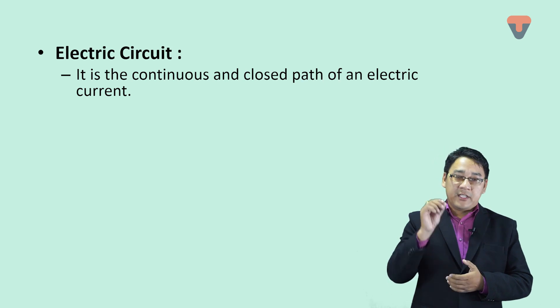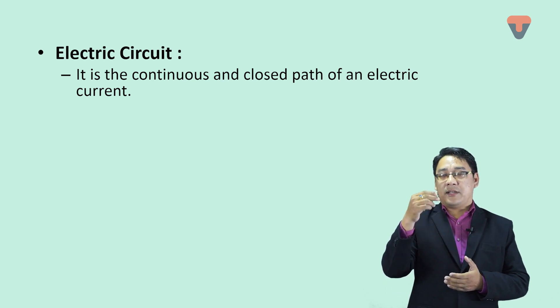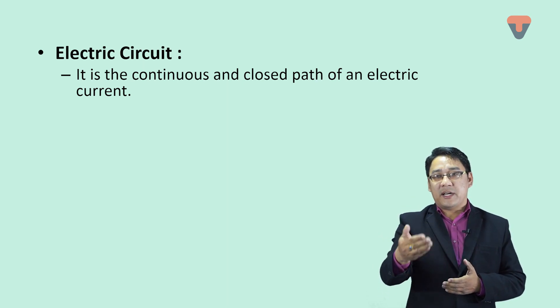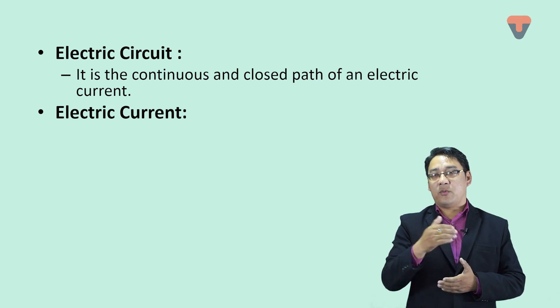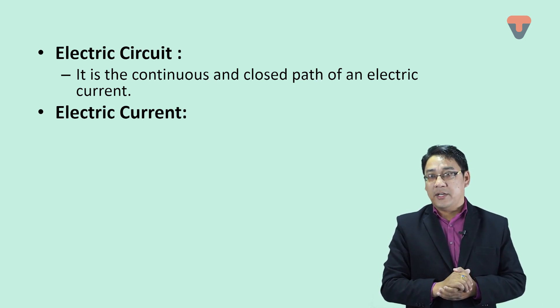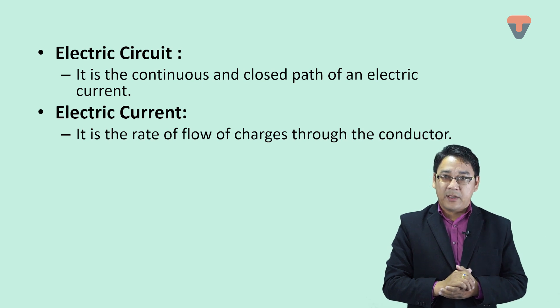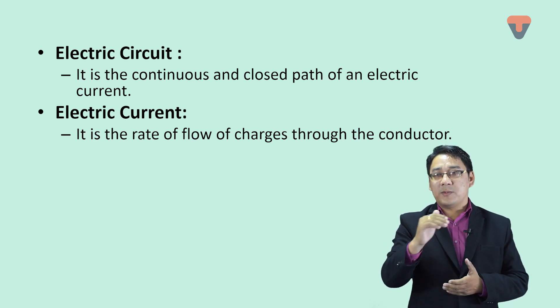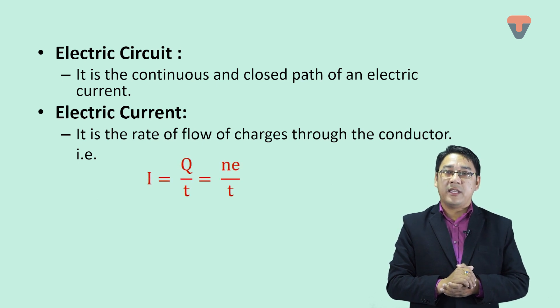If we have charge flowing in a circuit, we call it electric current. We can define current as the rate of flow of charge through a conductor from point A to point B. The relation for current is capital I, so I equals Q by T.